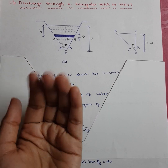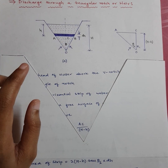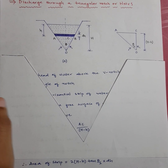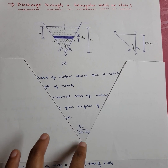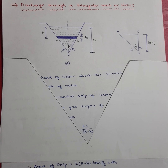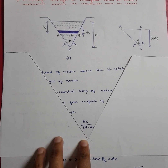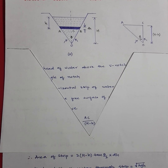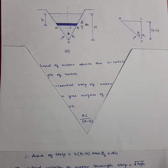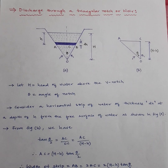Water rises to some level in the V-notch and flows through it. If the total nappe height is H, this apex point is also called the crest point of the notch, because the bottom part of a notch is called the crest. The notch is called a V-notch because it looks like the letter V.